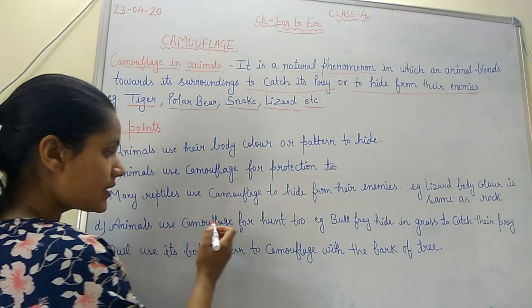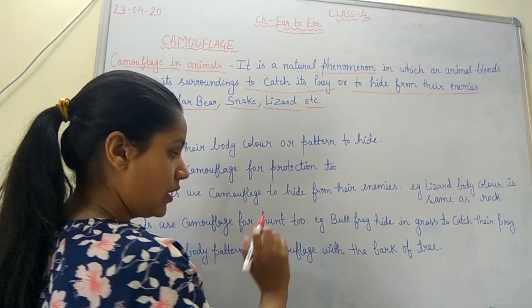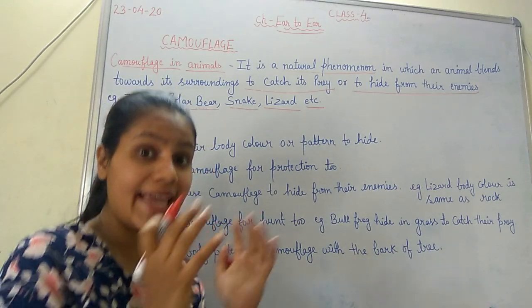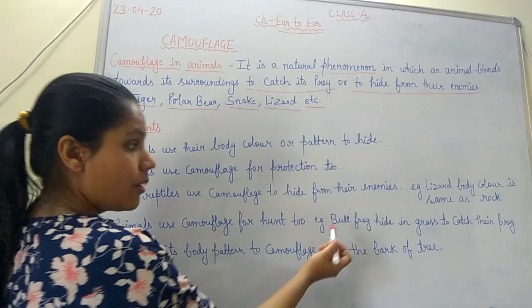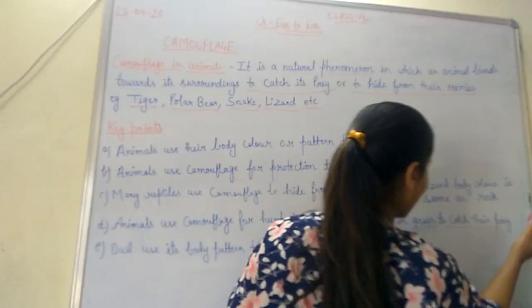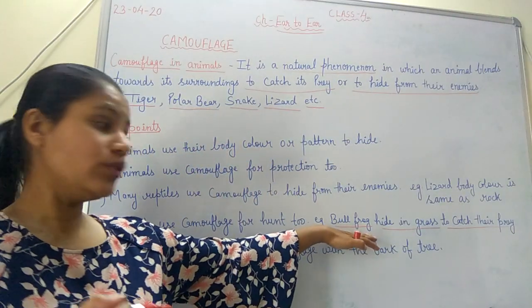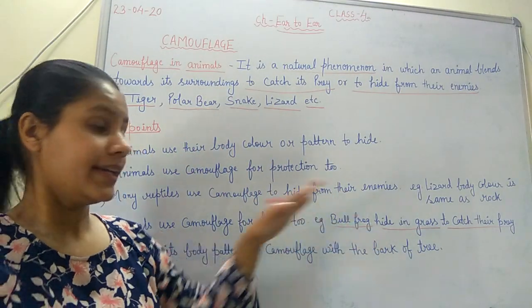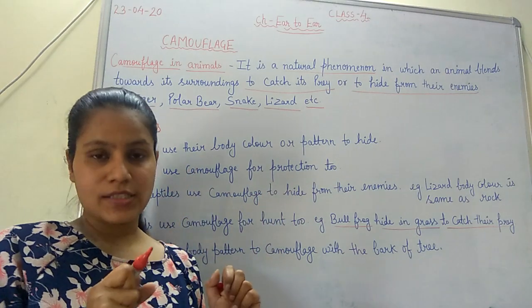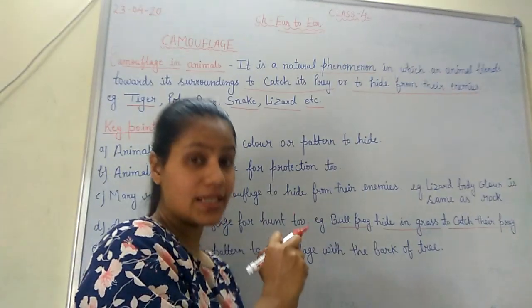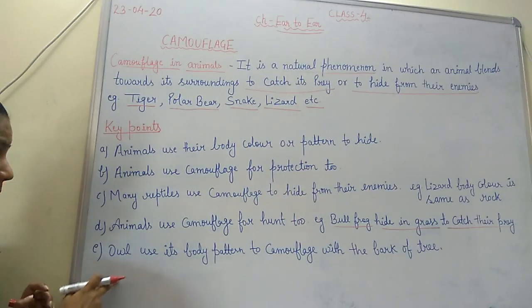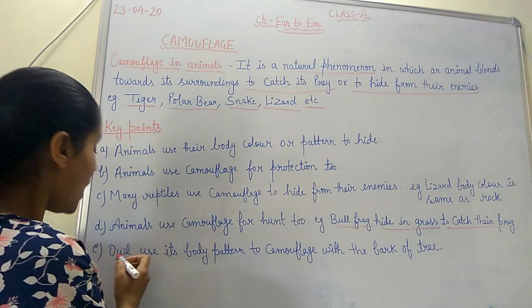Animals use camouflage for hunting too. They blend with their surroundings so they can hide and catch their prey. For example, the bullfrog is green in color and hides in the grass to catch its prey. We know frogs have a sticky tongue — they don't need teeth; they just wait for an insect and catch it with their sticky tongue.